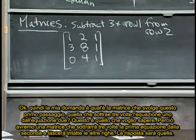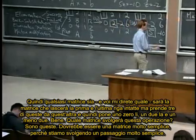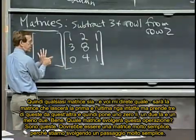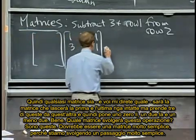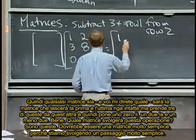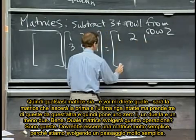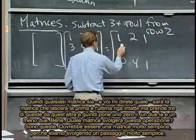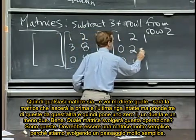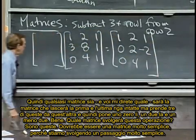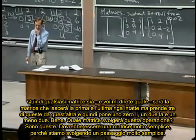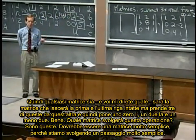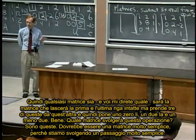And leaves the other rows the same. Just, just, I mean, the answer is going to be that. So whatever matrix this is, and you're going to, like, tell me what matrix will do it, it's the matrix that leaves the first row unchanged, leaves the last row unchanged, but takes three of these away from this, so it puts a zero there, a two there, and a minus two. Good. What matrix will do it? It's these, it should be a pretty simple matrix, because we're doing a very simple step.